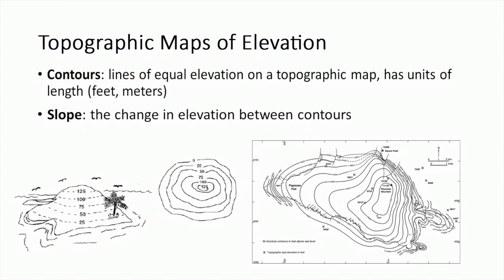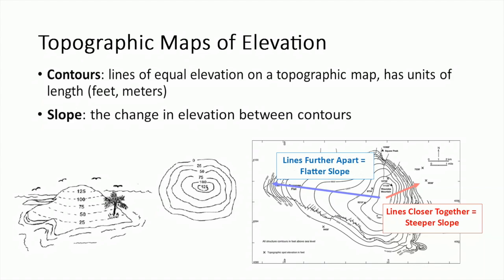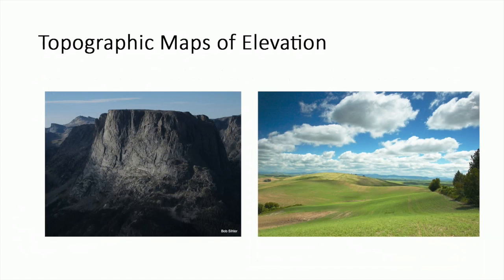Another important concept to topographic maps is slope, or the change in elevation between contour lines. As in the image on the right, when there are many contour lines closer together, the slope of the surface at that point is steeper. When the contour lines are spaced further apart, the slope of the surface is flatter. In this way, we are able to distinguish between features like a cliff face or a small hill.